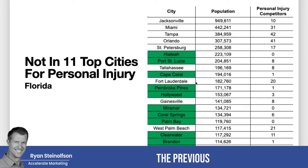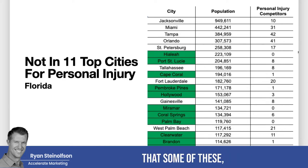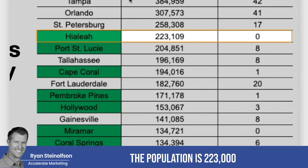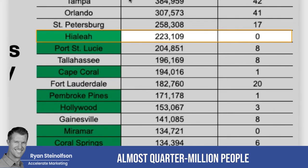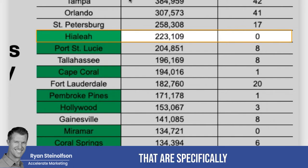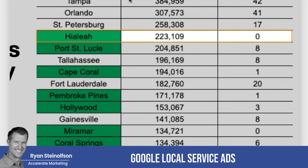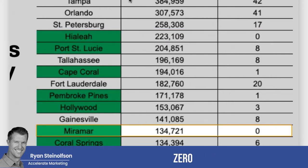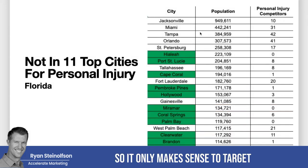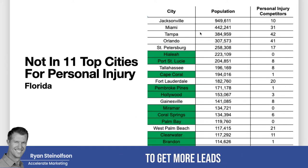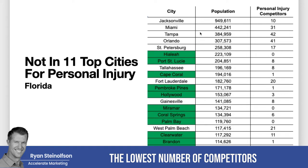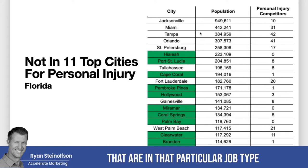This is what we did for Southern California, and the same thing we did for Florida — this is for PI. You'll notice that some of these, like Hialeah, have a population of 223,000 — almost a quarter million people — and there are no PI attorneys specifically in the PI vertical that have set up Google local service ads there. Same thing with Miramar: zero competitors, 134,000 people. It only makes sense to target cities with the largest population and the lowest number of competitors in that job type.